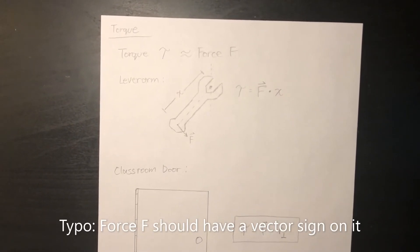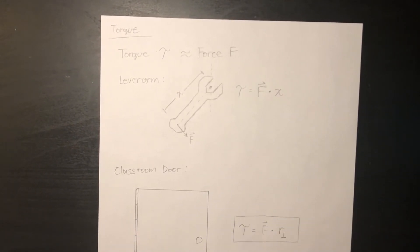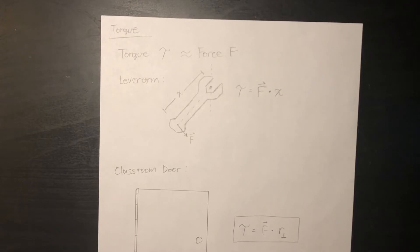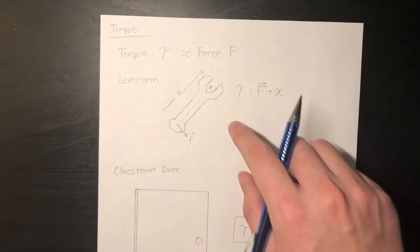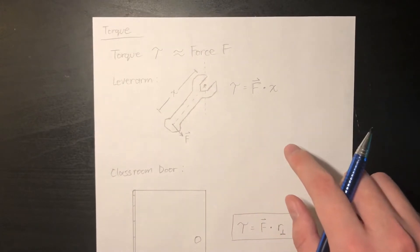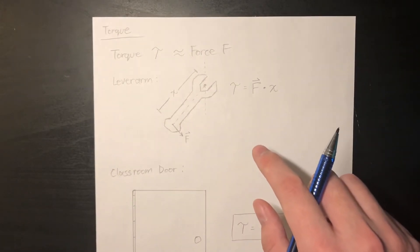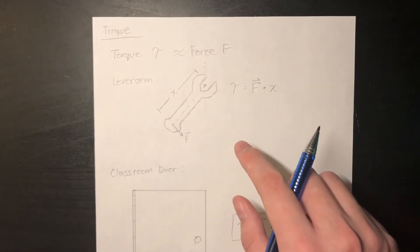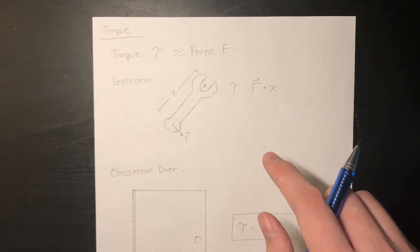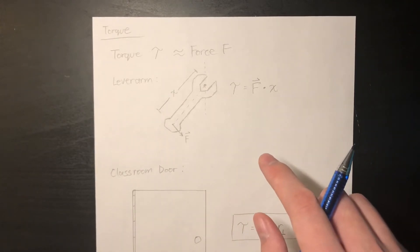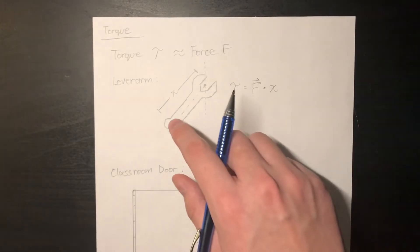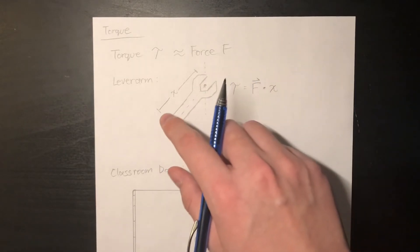The first concept in rotational dynamics is torque. Torque is similar to force — we can think of torque as a force in the world of rotation. Torque is calculated using force and lever arm distance, as you can see in this picture. We take the perpendicular component of the applied force and multiply it by the lever arm length, which is from where the force is applied to the rotational axis — in this case, x. That's your lever arm.